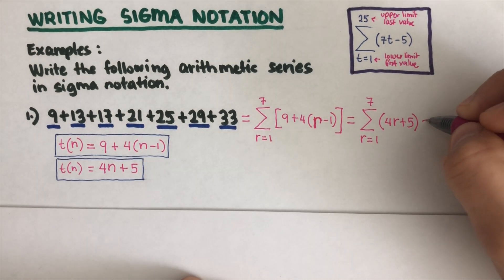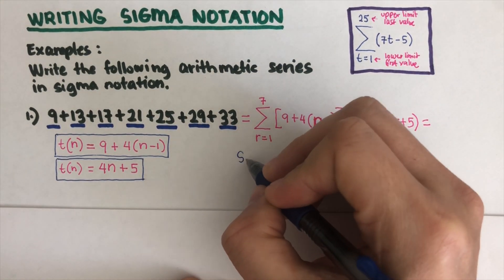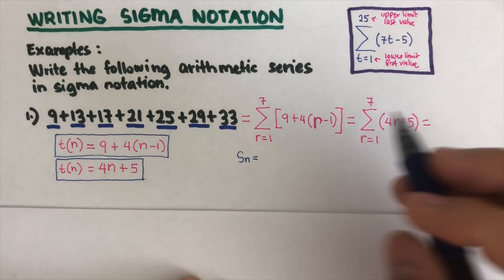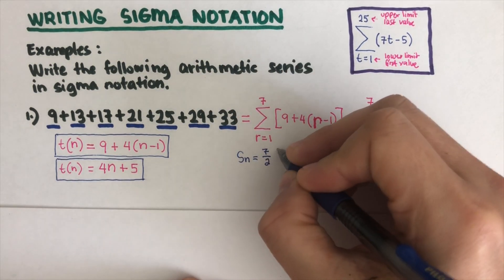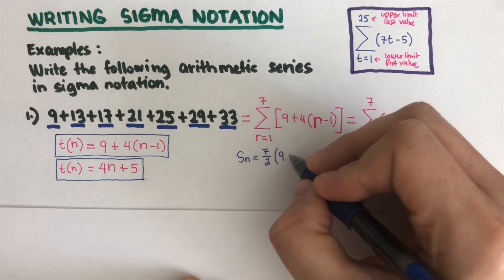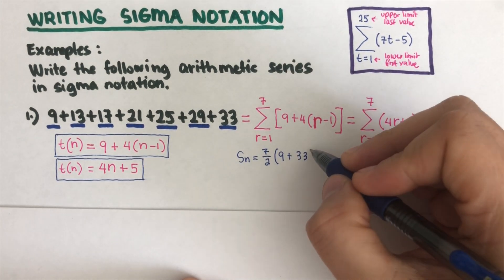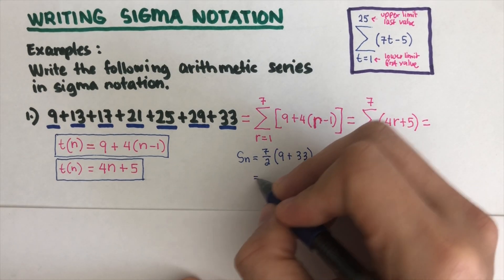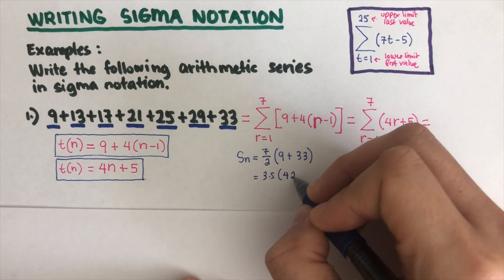Evaluate means we need to determine what is this equal to. We're going to use the equation for sum: S(n) is equal to the number of terms, that would be 7, divided by 2, times the first term 9 plus 33. That becomes 3.5, and 9 plus 33 is 42.